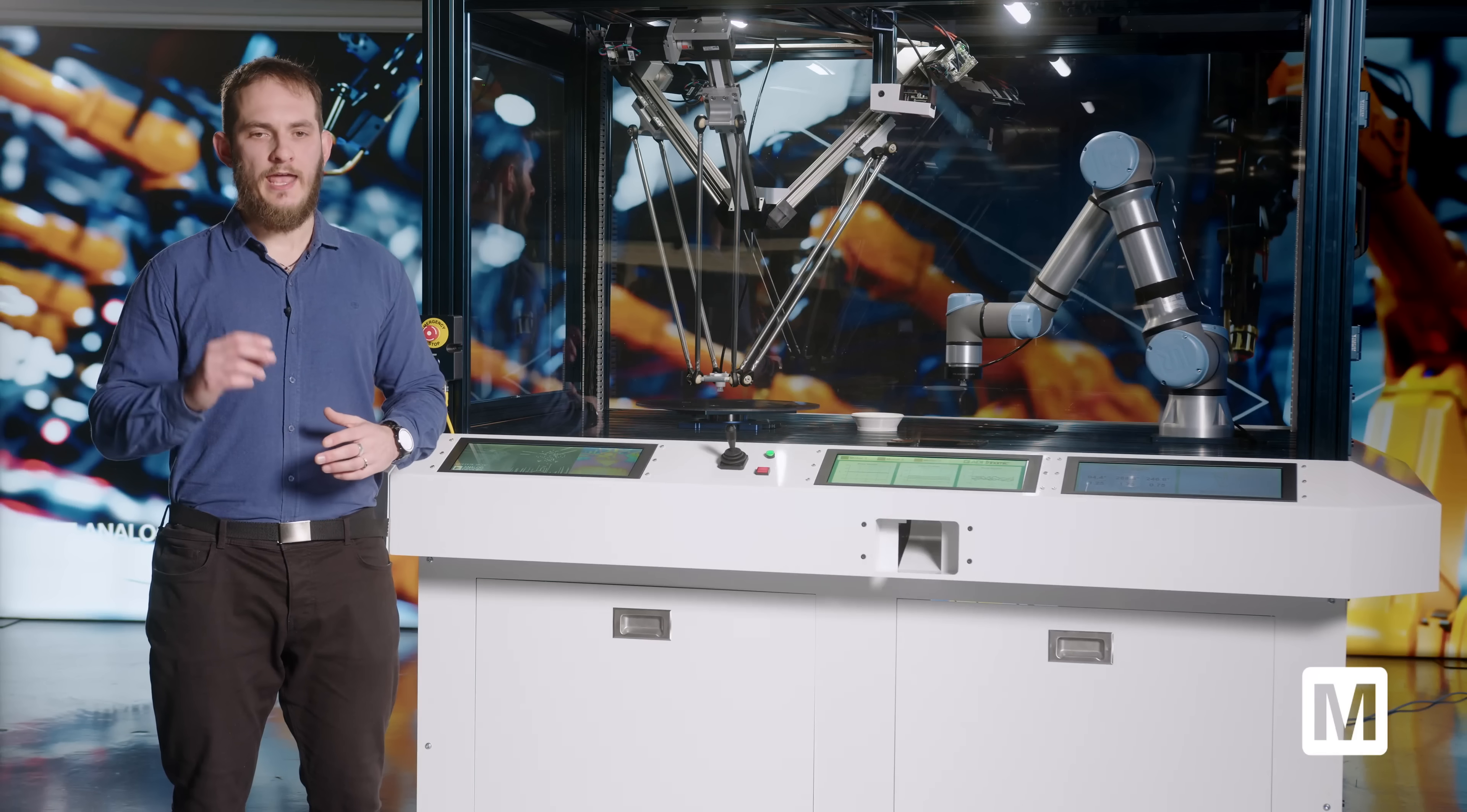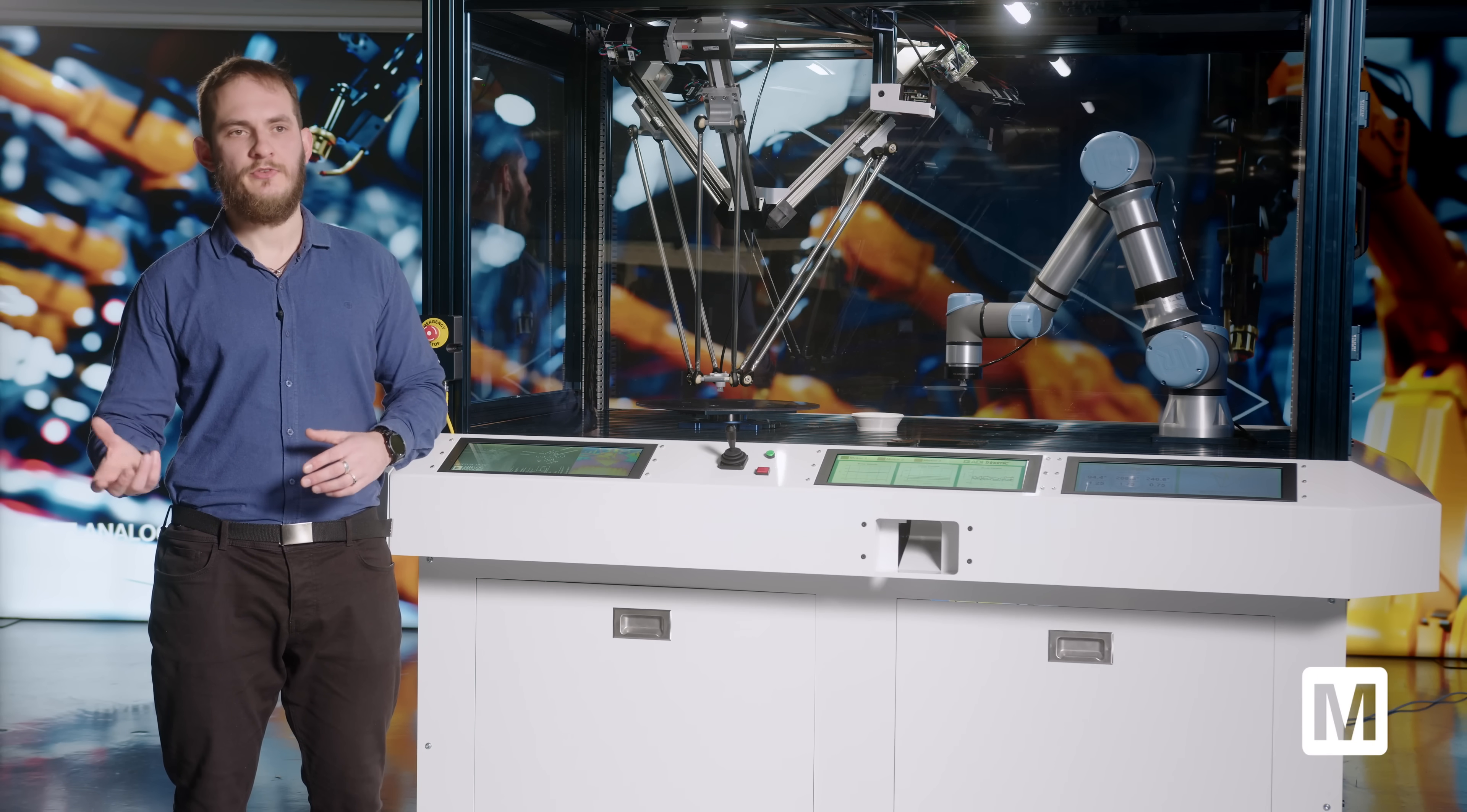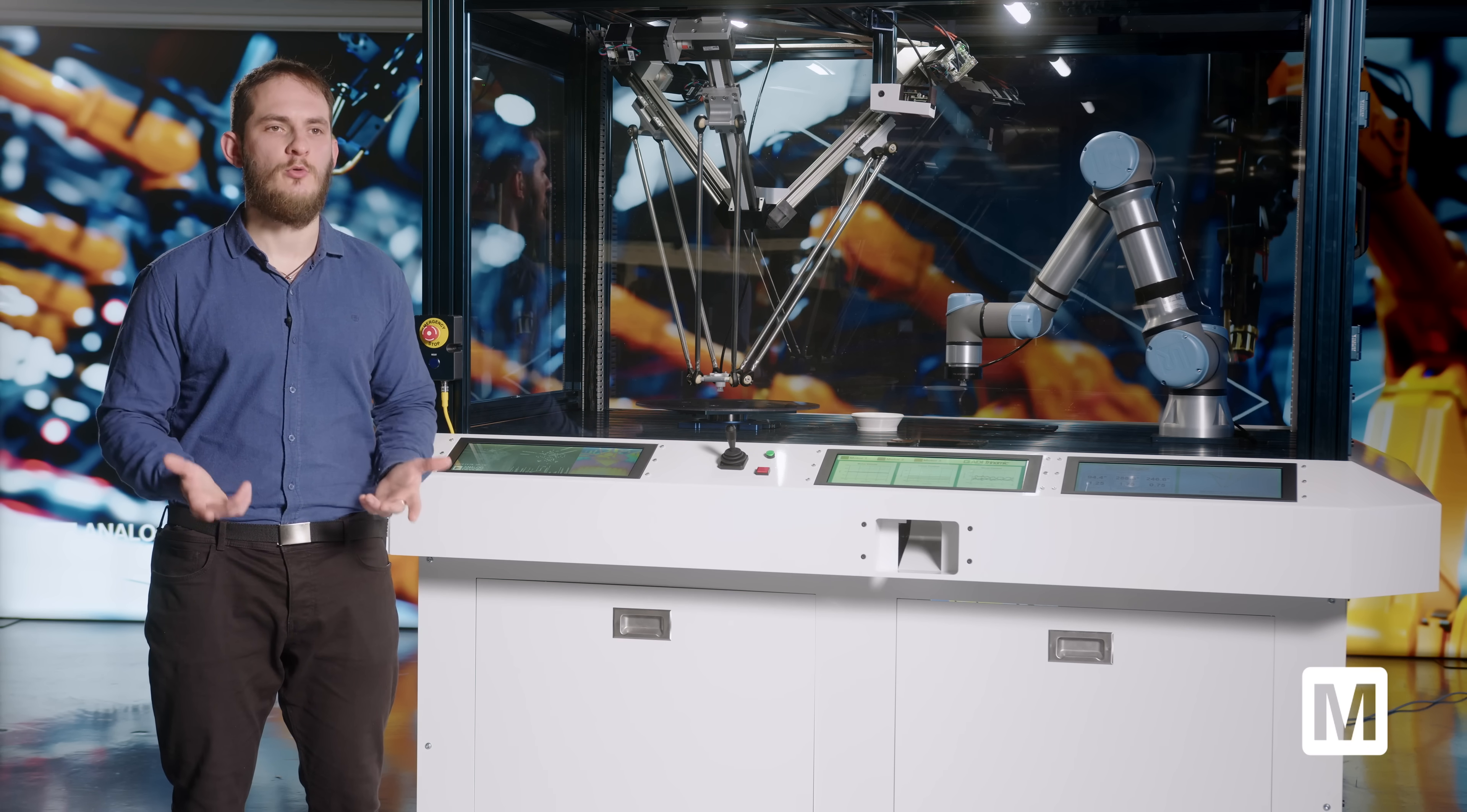Machine vision consists of getting the output from a camera, whether that's a 2D or a 3D camera. In this case, we're talking about the 3D time-of-flight camera and running some algorithms on this raw image that can give useful information for the robots. You're giving eyes to the robot.